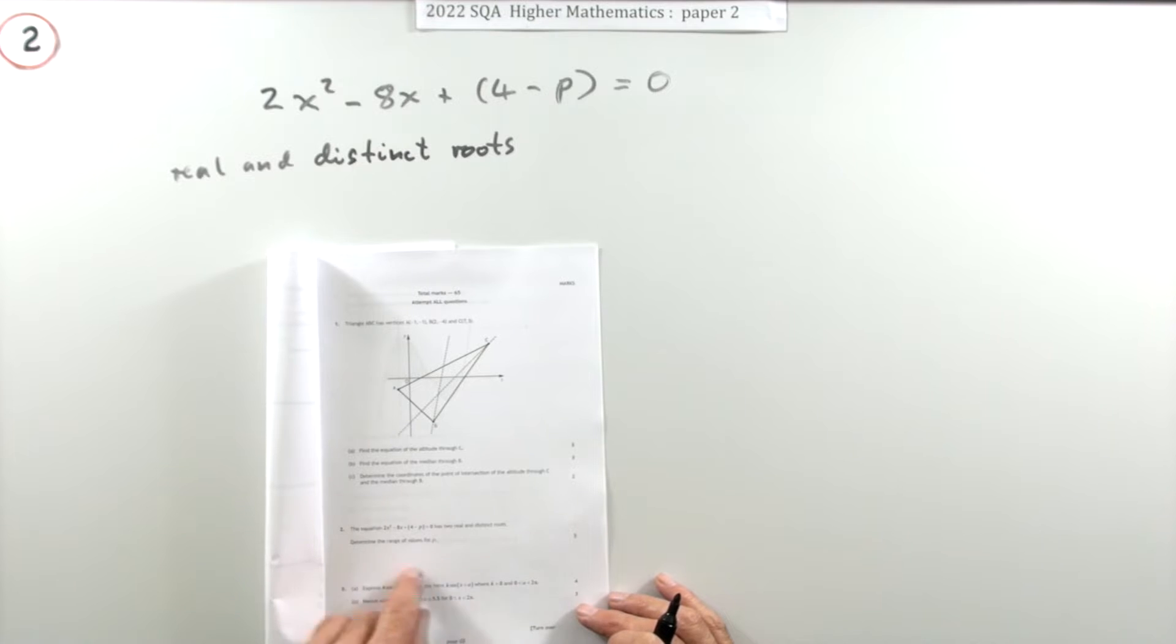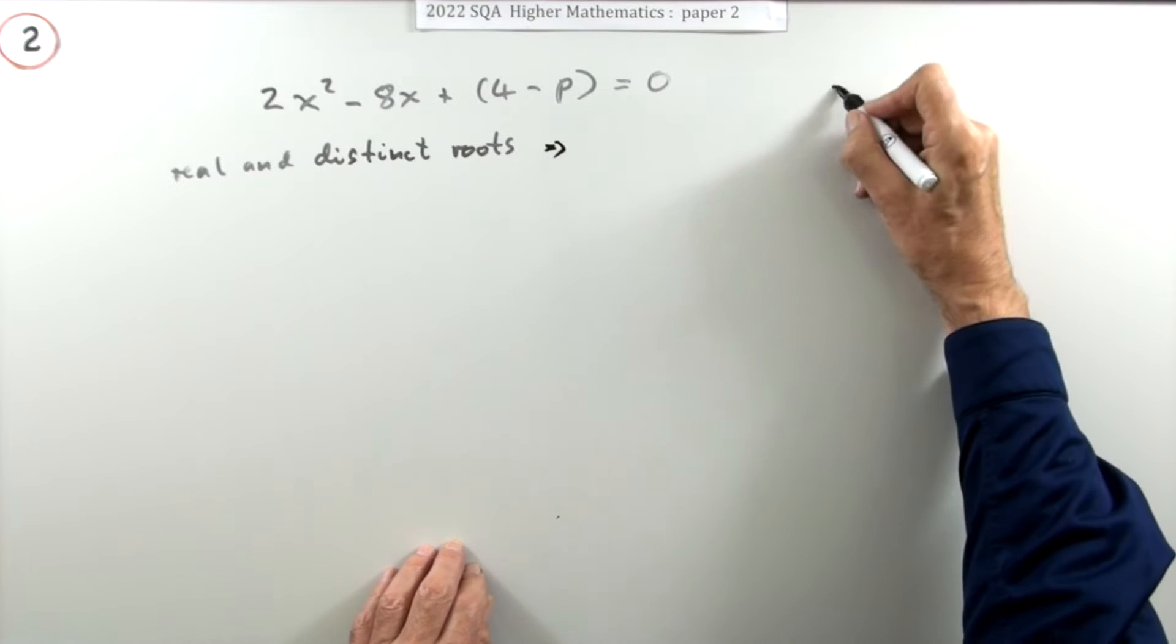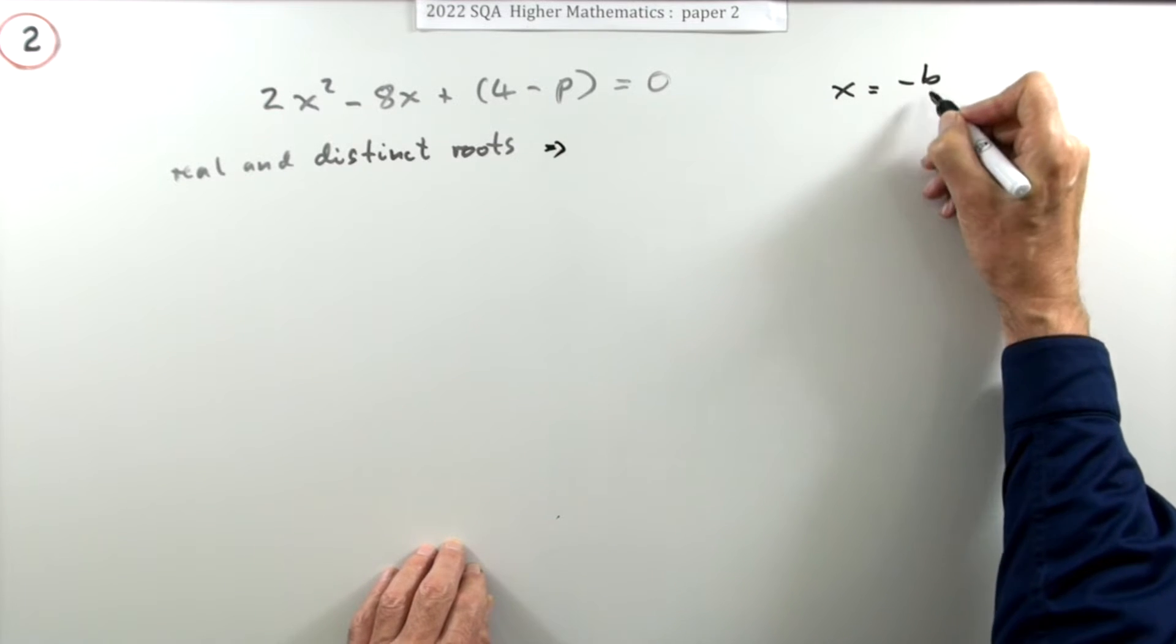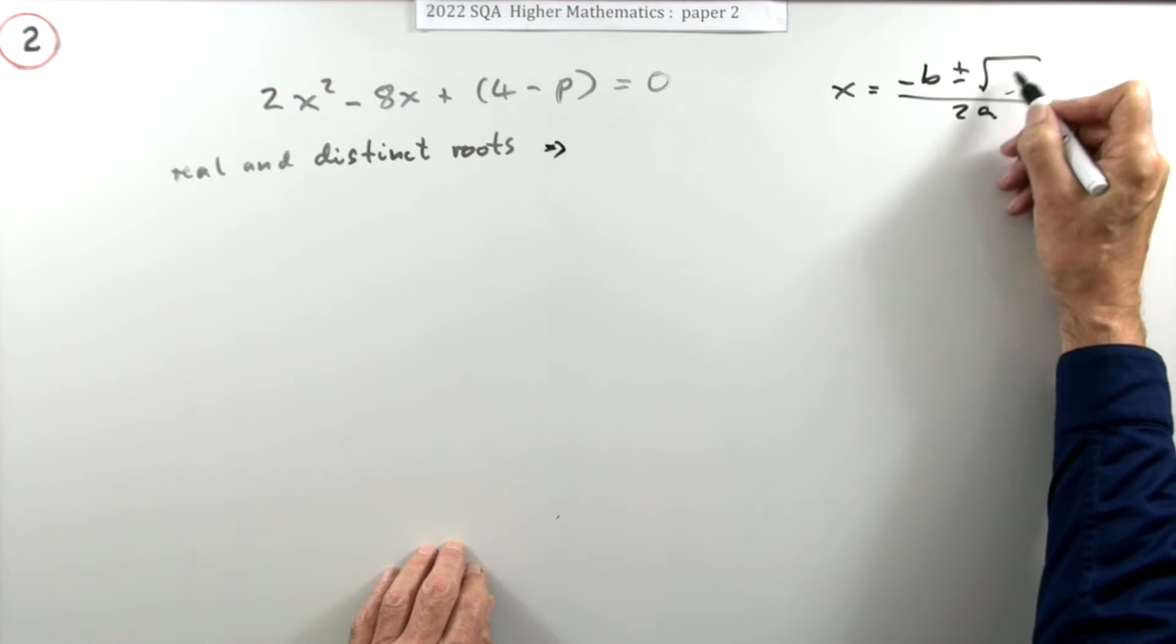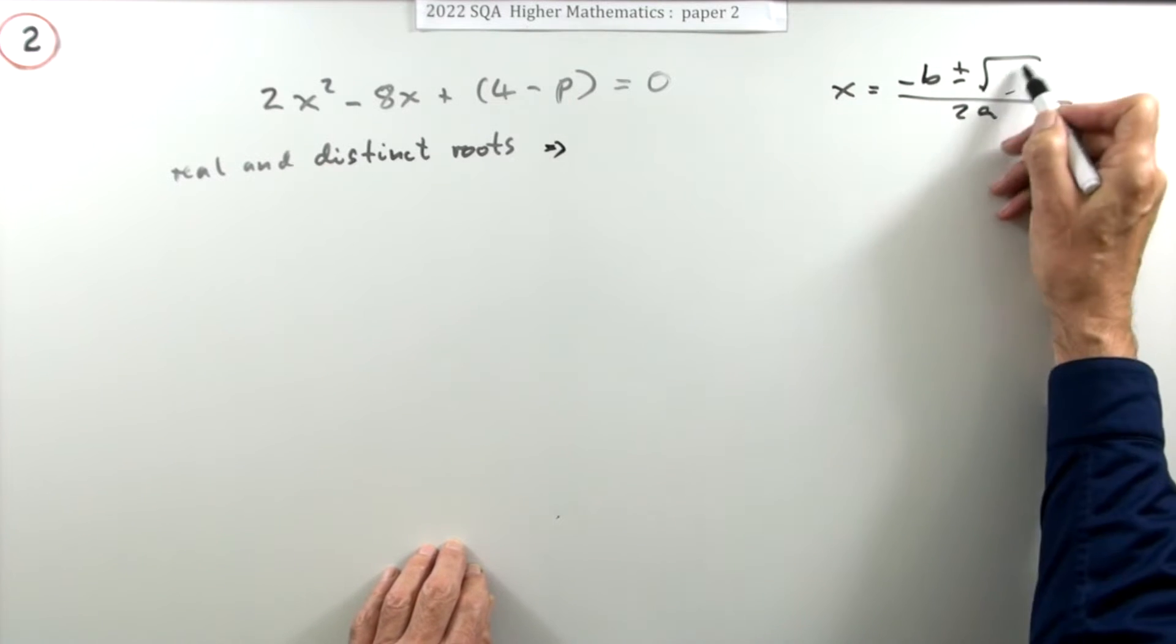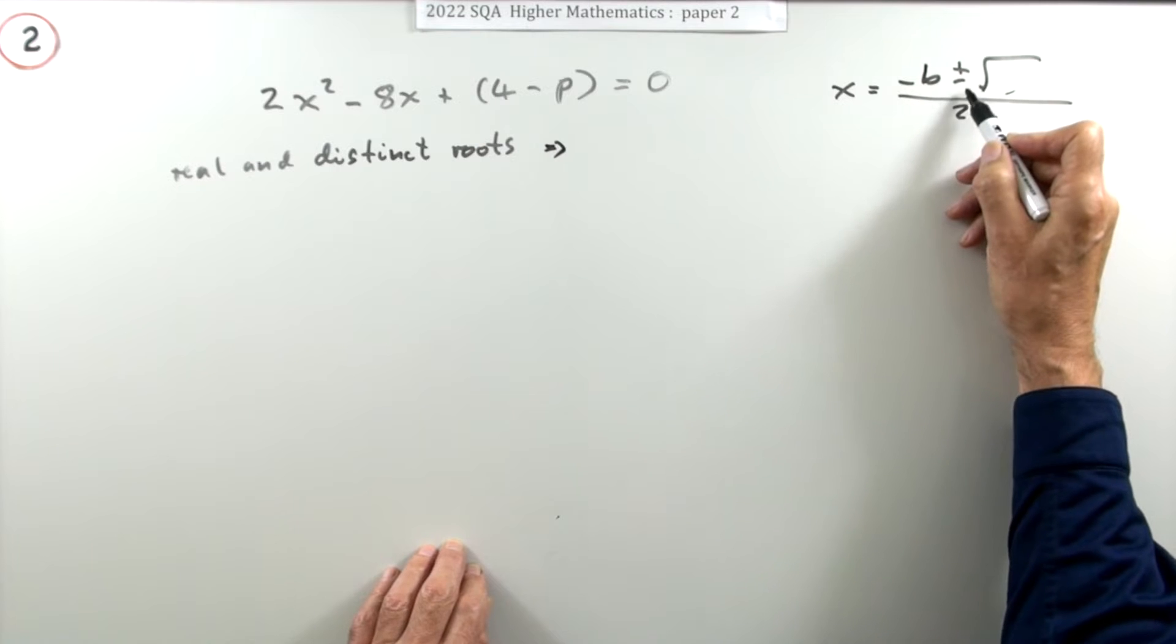Determine the range of values of p. It's all about the discriminant. To get the solution of a quadratic equation, you've got that quadratic formula: negative b plus or minus the square root of this blob over 2a. It all depends on this square root.